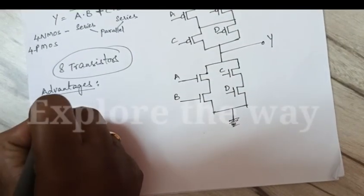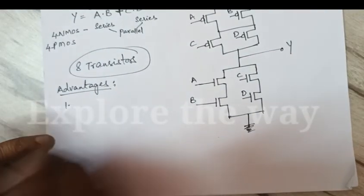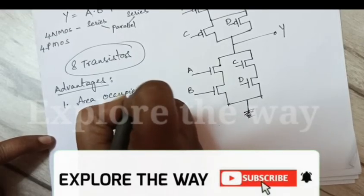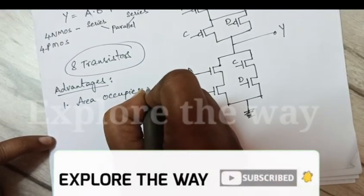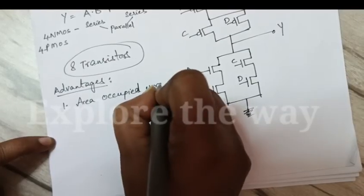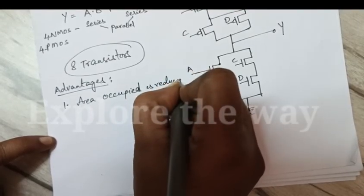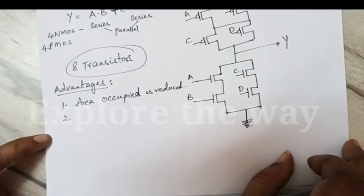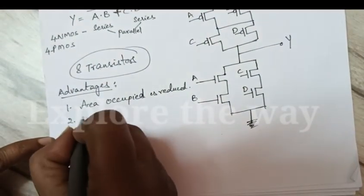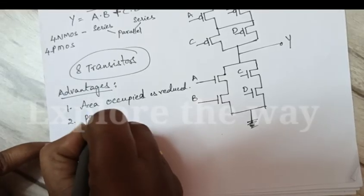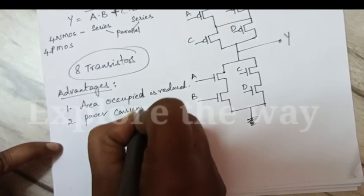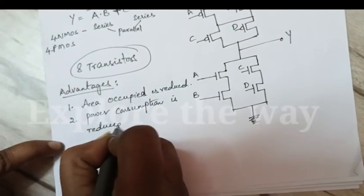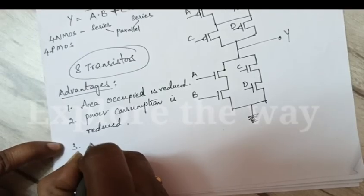Only 8 transistors are sufficient to implement CMOS AOI gate. The number of transistors are very much reduced, thereby area occupied is reduced. Power consumption is reduced.